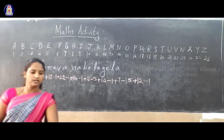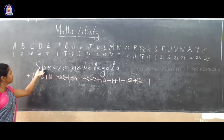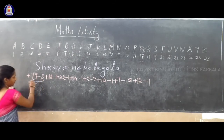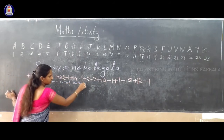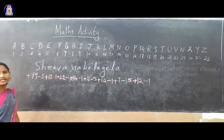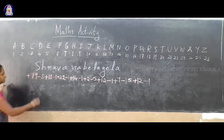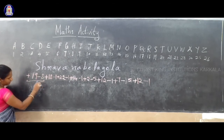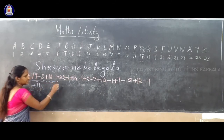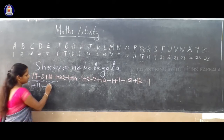First, write the name and write the numbers. S means 19, H means 8, R means 18. Now simplify in pairs. Plus 19 minus 8: different sign, subtraction. 19 minus 8 is 11. 19 is greater, sign is plus — so plus 11. Next two: plus 18 minus 1. 18 minus 1 is 17. 18 is greater, sign is plus — so plus 17.